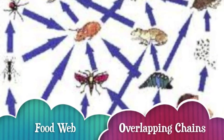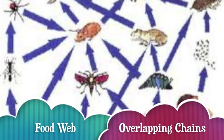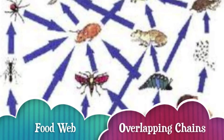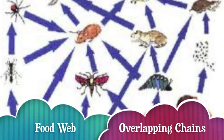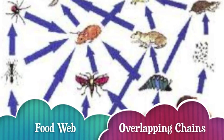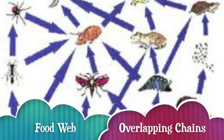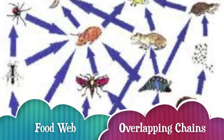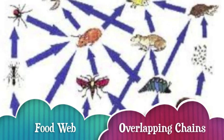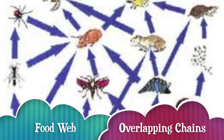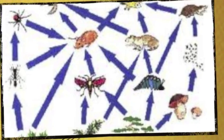Food webs show how all of the food chains within an ecosystem are interrelated. We can see this by the overlapping arrows in the diagram.